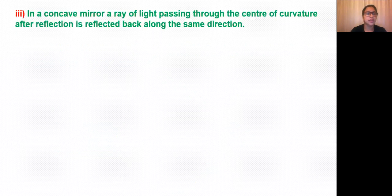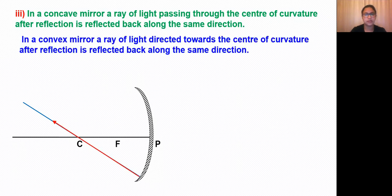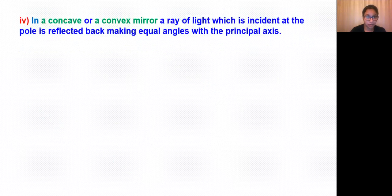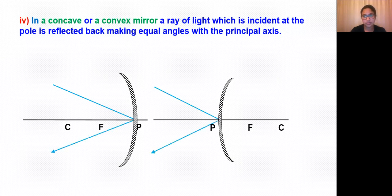Rule 3: in a concave mirror, a ray of light passing through the center of curvature, after reflection, is reflected back along the same direction. Rule 4: in a concave or convex mirror, a ray of light incident at the pole is reflected by making equal angles with the principal axis.